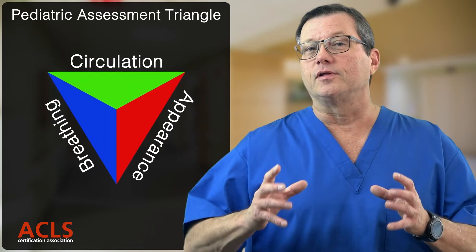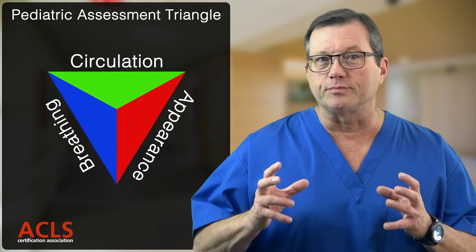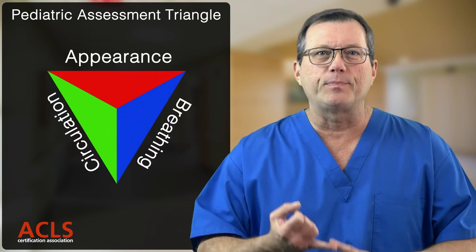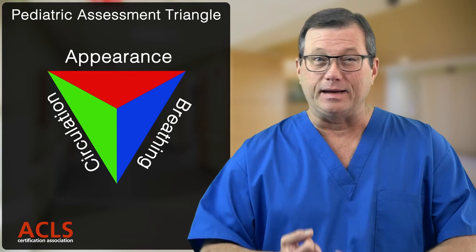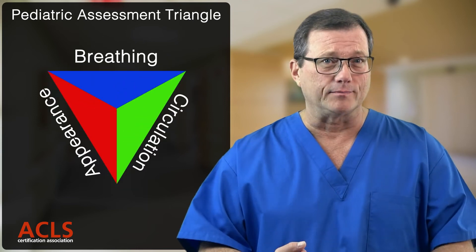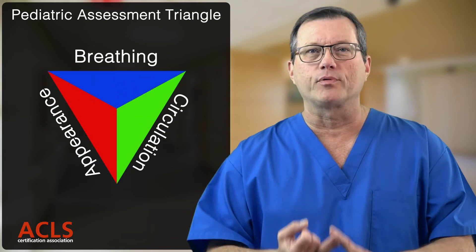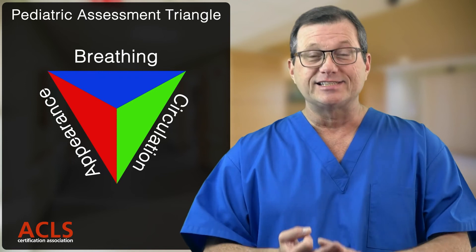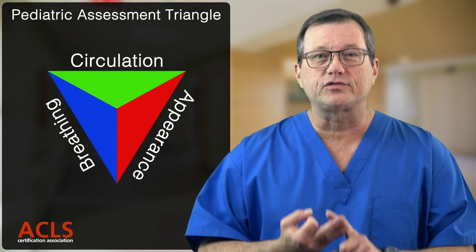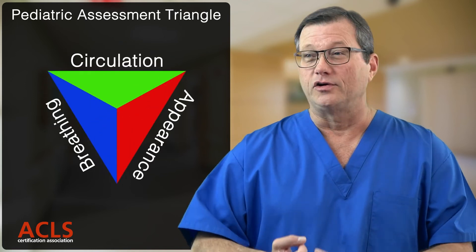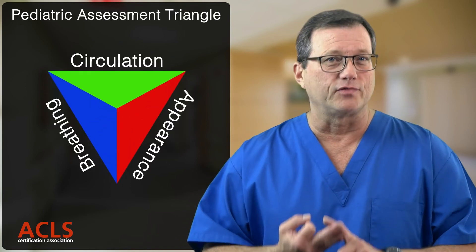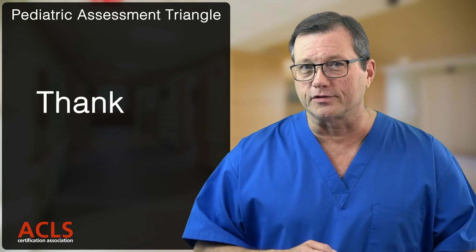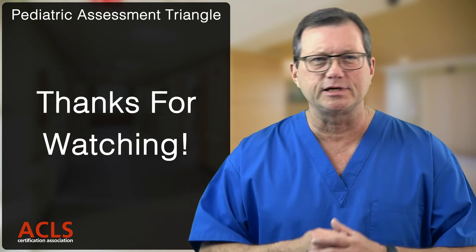To summarize, the components of the Pediatric Assessment Triangle are: A — Appearance, meaning mental status; B — Breathing, looking for increased work of breathing; and C — Circulation, assessing skin color for signs of hypoperfusion. I'm Mark, thanks for watching, and we'll see you in the next video.